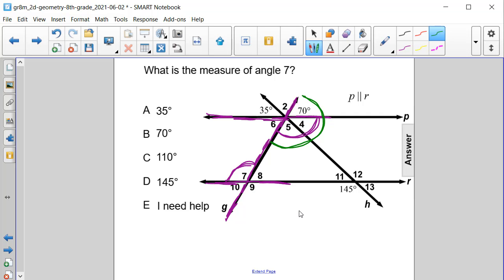If we take 180 and subtract 70 from it, we get 110 degrees.